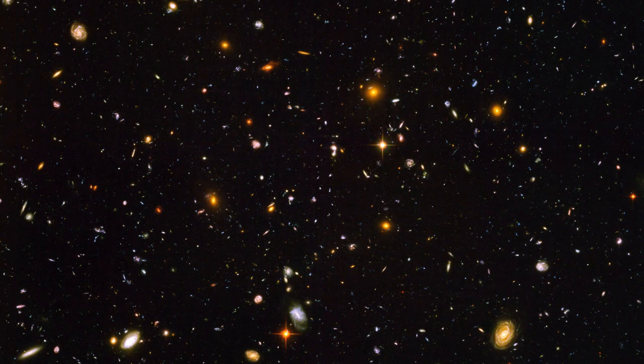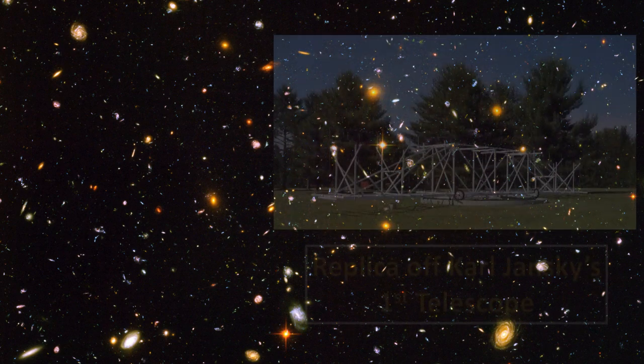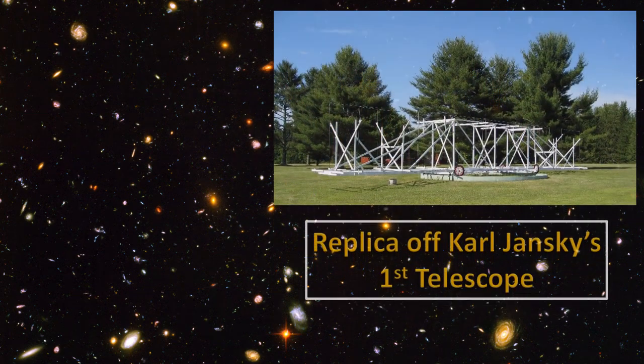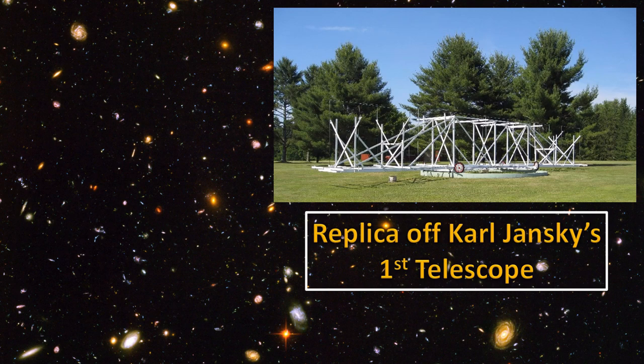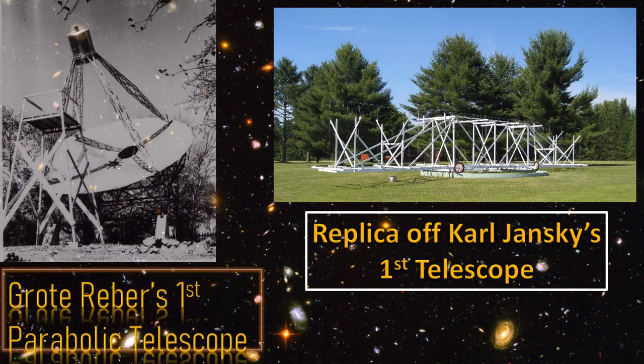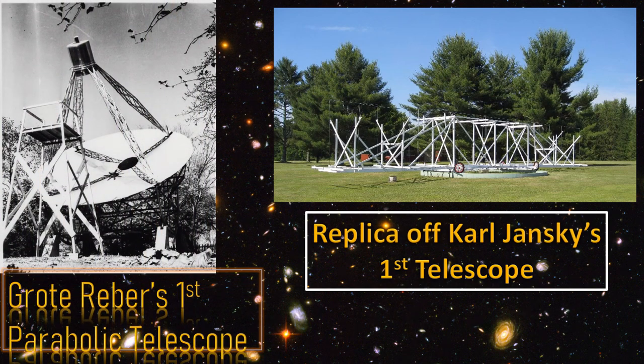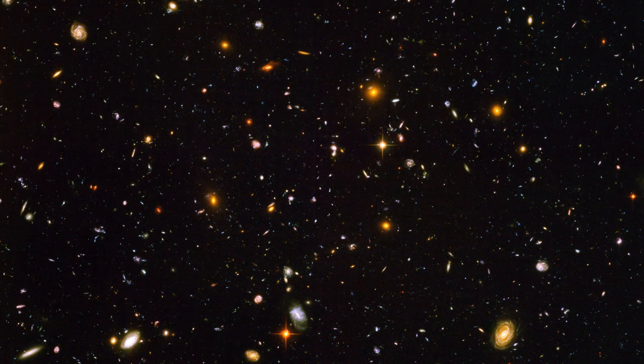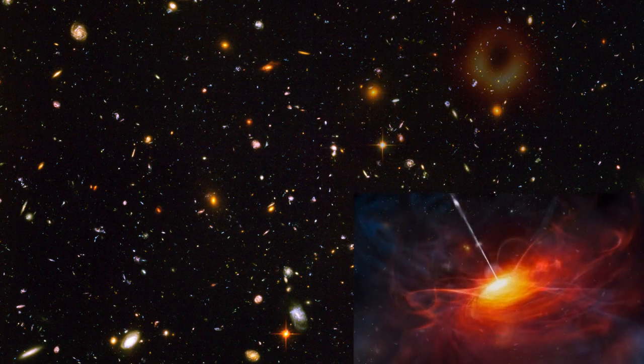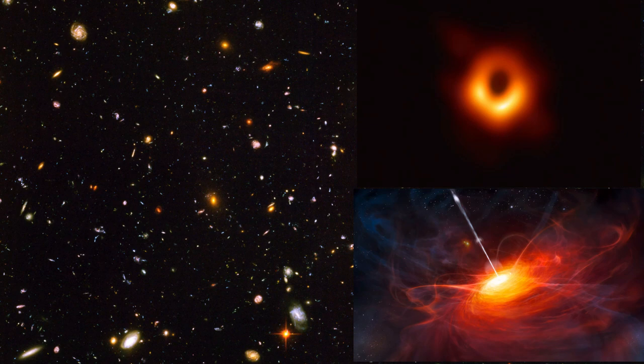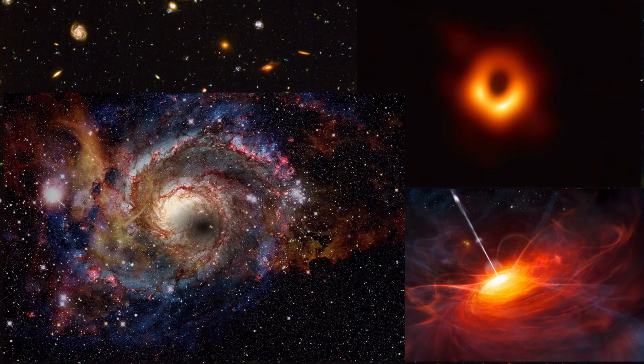Karl Jansky, an engineer with Bell Telephone Laboratories in 1932, accidentally discovered astronomical radio source when he was trying to find out source of static. Later, in 1937, Grote Reber was able to build first parabolic telescope in Illinois. Radio telescopes have given us capability of studying quasars, spotting black holes, and helped us discover distant galaxies.